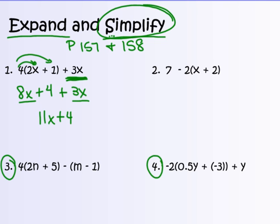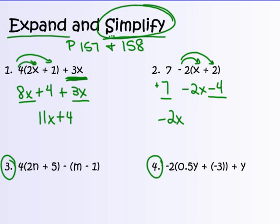Number 2: students want to do 7 minus 2 first, but you can't — you have to multiply first. Negative 2 times x gives negative 2x, and negative 2 times positive 2 gives negative 4. Bring down the 7. The constants negative 4 and positive 7 combine to give positive 3. The algebraic term negative 2x doesn't combine with anything, so the final answer is negative 2x plus 3.